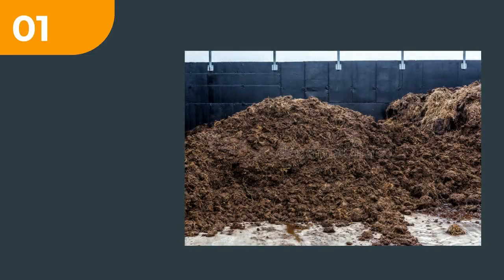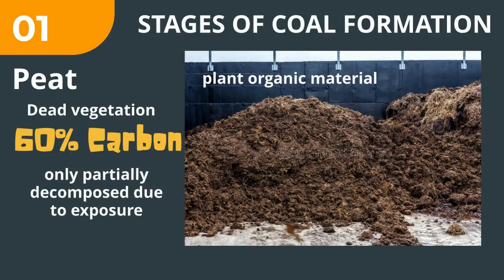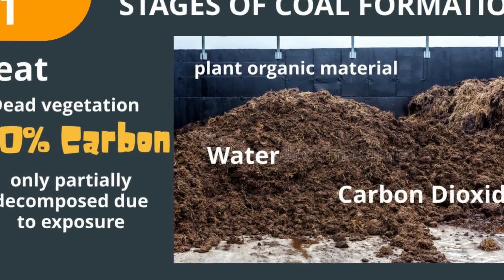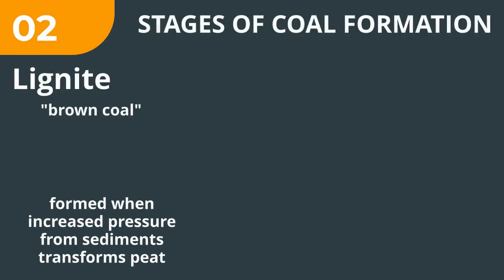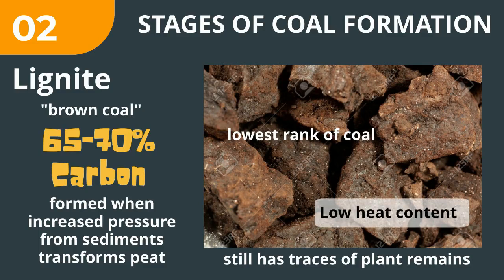Peat is dead vegetation with 60% carbon. It is an accumulation of plant organic materials that only partially decompose due to exposure to water and carbon dioxide. It is also evidence of plant remains in water. Lignite, often referred to as brown coal, is a soft, brown, combustible sedimentary rock formed from naturally compressed peat. It still has traces of plant remains and is considered the lowest rank of coal due to its relatively low heat content.